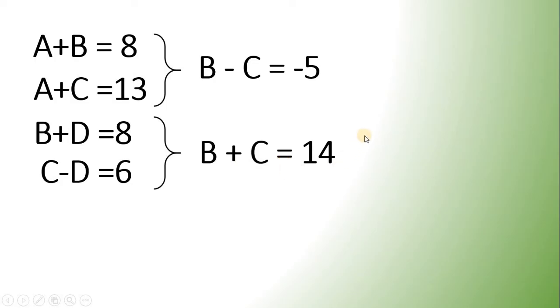Now, if we add the resulting equations, we will get 2B equals 9. At this point, negative C plus C will give us 0. And negative 5 plus 14 will give us 9. So, we have 2B equals 9. Divide both sides by 2 will give us B equals 4.5.